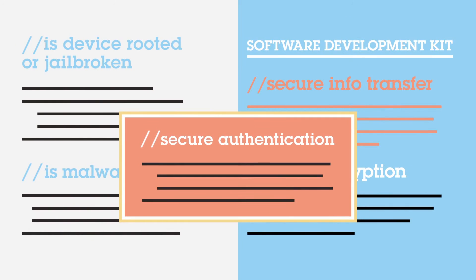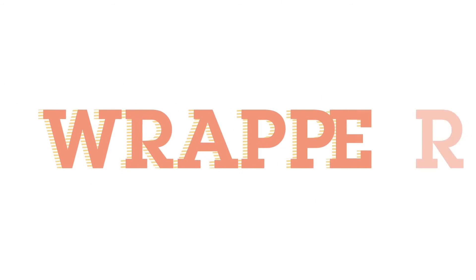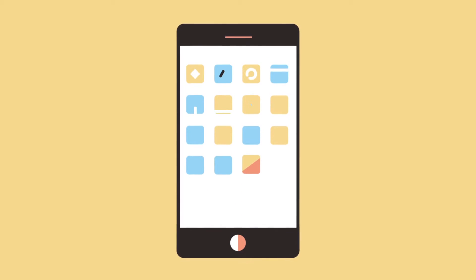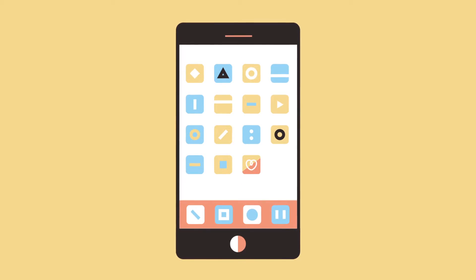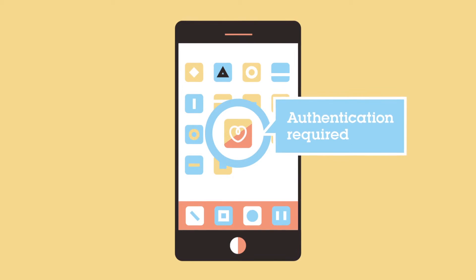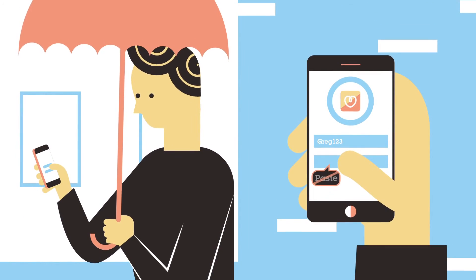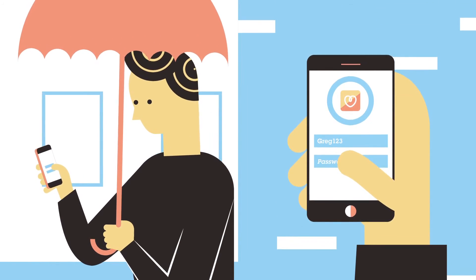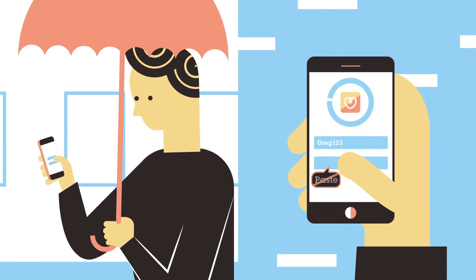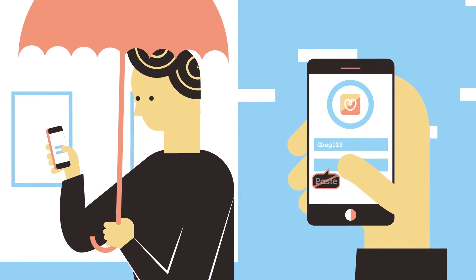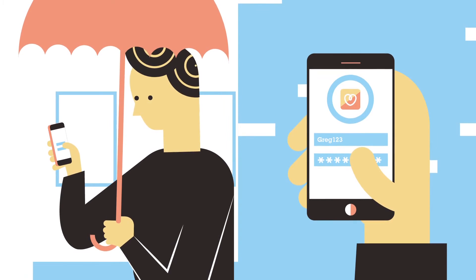Another step after development is app wrapping. This adds multiple security layers of protection without making any changes to the app itself, and allows the app manager to set specific policy elements. For example, Greg may want to cut and paste in his healthcare policy number, but the SDK surrounding the app will force him to type in the information so his data is not exposed.